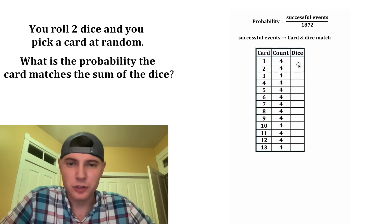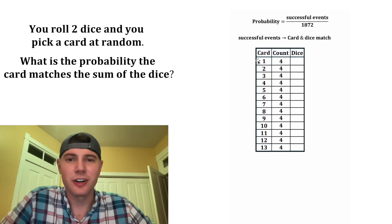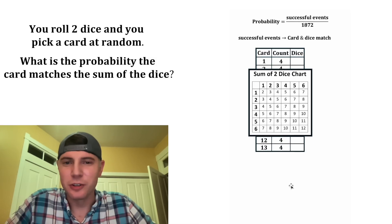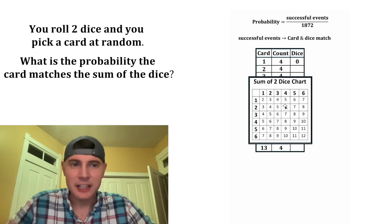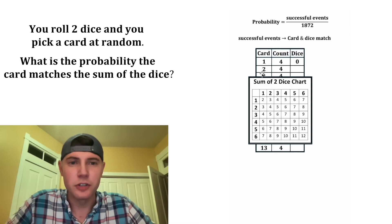Next, let's find how many dice rolls will give us a sum that matches the card. And we can use these notes for the sum of 2 dice. So looking at this sum of 2 dice chart, how many rolls will give us a sum that matches the 1 card? And that's none of them. So we're going to put 0 here.